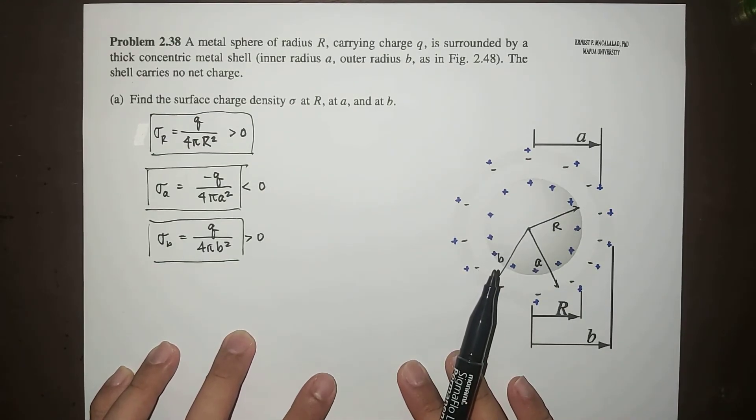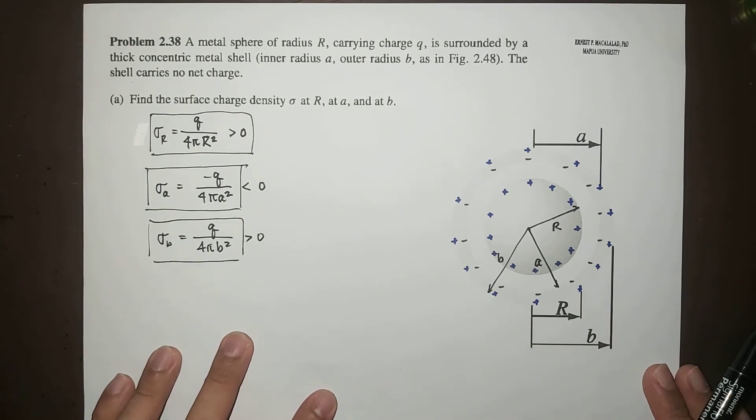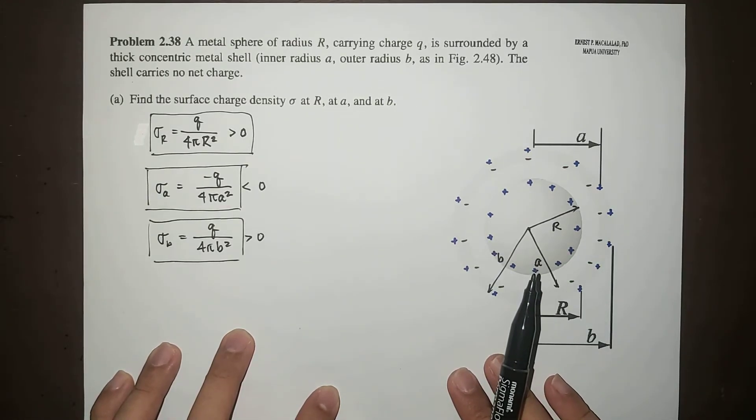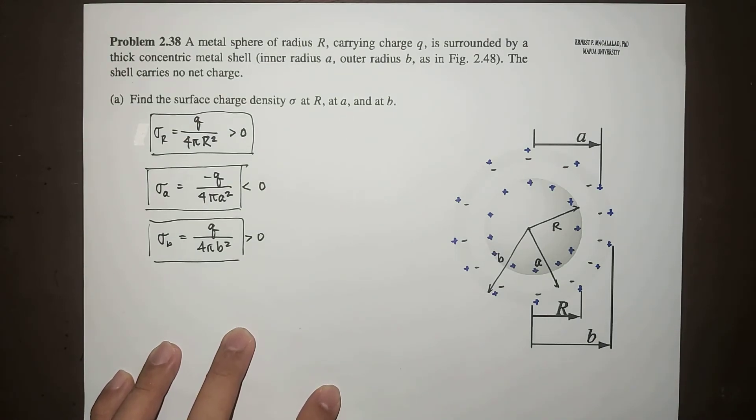That's a very simple solution to problem 2.38 part A of Griffith's fourth edition. In the next video, we're going to solve the next part of this problem, which involves computation of the potential at the center using infinity as the reference point. Thank you for watching. I hope you learned something today, and I'll see you in the next video.